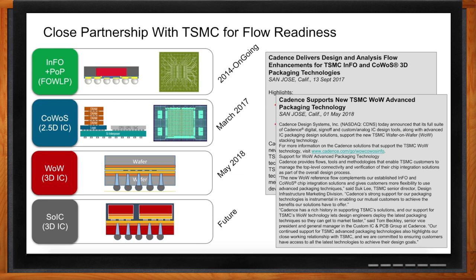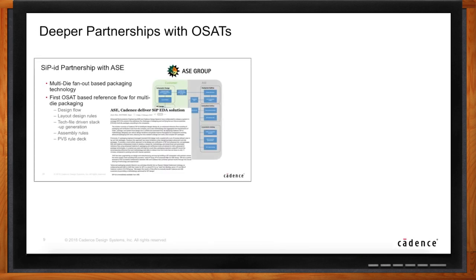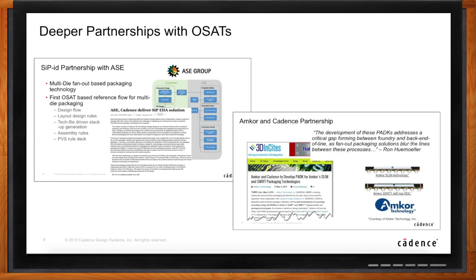The OSATs don't want to be left out. It's good for the whole business because now the OSATs are interested in developing reference flows and providing more content to their customers to make the design job of their advanced packages easier — providing almost the same level of reference flows and design kits that the IC foundries have. We've worked with Amcor and ASE and other OSATs on developing reference flows. We announced our partnership with Amcor about a year ago on their Slim and Swift technologies — their versions of fan-out wafer-level packaging. And most recently, a really good partnership with ASE for something they call SIPID, which is System and Package Intelligent Design — a full reference flow for anyone trying to design a multi-die package.